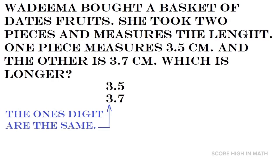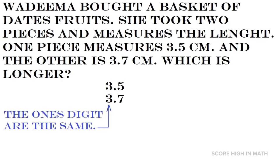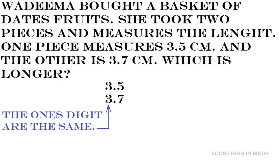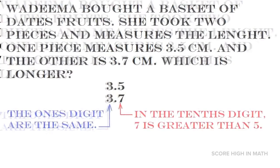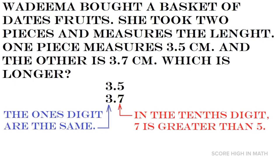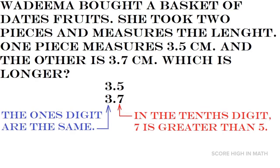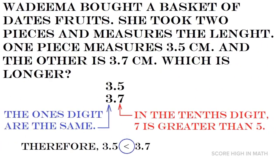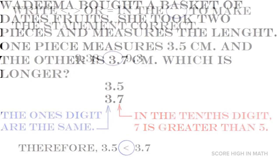Let us choose another strategy by lining up the measurements, or the decimals, on their proper place value. We can immediately identify that the ones digits are the same. Looking at the tenths digit, 7 is greater than 5, therefore 3.5 is less than 3.7.